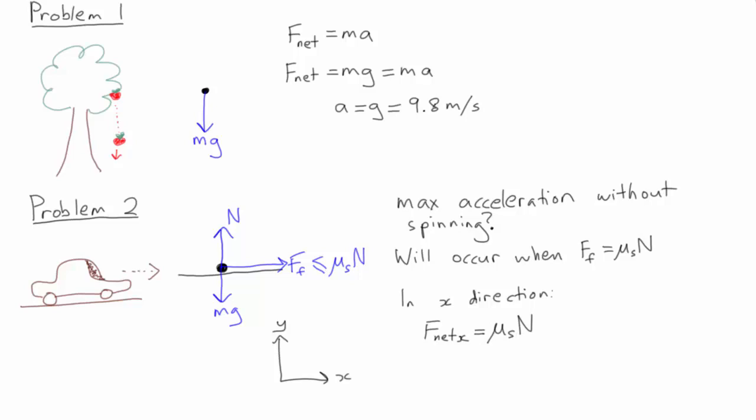In the y direction, we have the normal force pointing in the positive y direction and gravity pointing in the negative y direction. If we add these up, we get the net force in the y direction is equal to n minus mg. And because the car is not accelerating upwards or downwards, the acceleration in the y direction is zero. And so F net in the y direction is equal to zero.